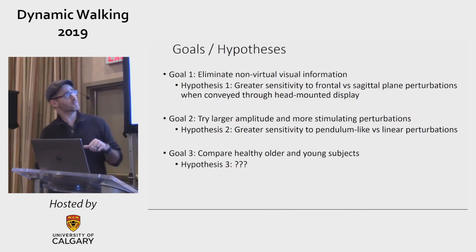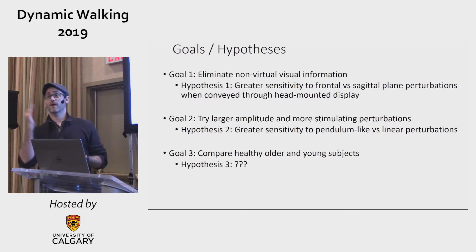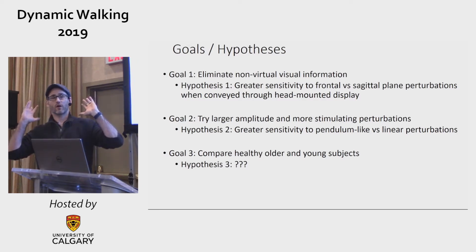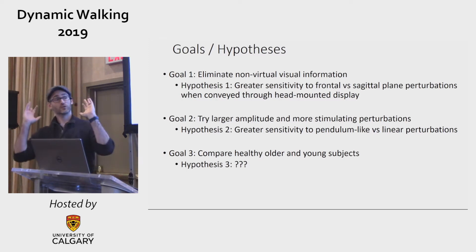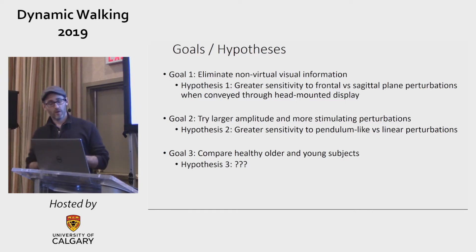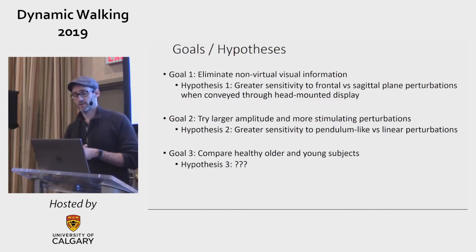We had three goals. First, eliminate non-virtual information — using a head-mounted display — and we predicted we would still see greater sensitivity to frontal plane perturbations versus sagittal plane. Second, try larger amplitudes and more stimulating perturbations, specifically rotational or pendular-like perturbations, which we thought would be more visually stimulating and also better matched to the pendular nature of walking. Third, determine what changes in older adults — I left the hypothesis blank because I could convince myself too many different ways.